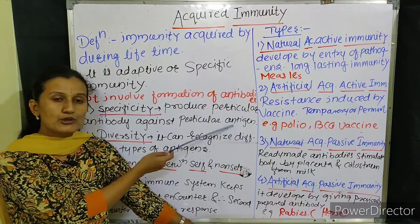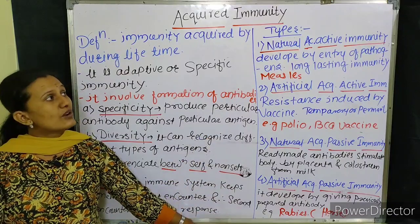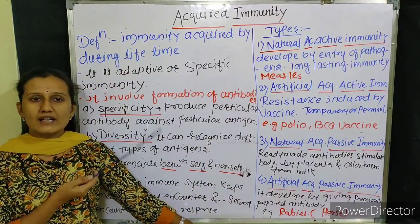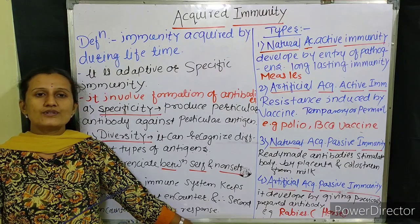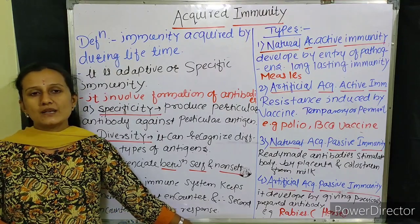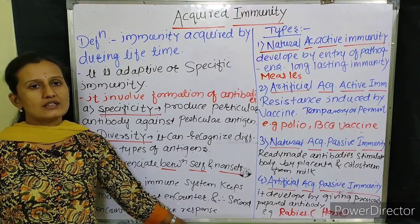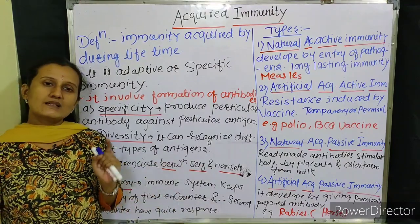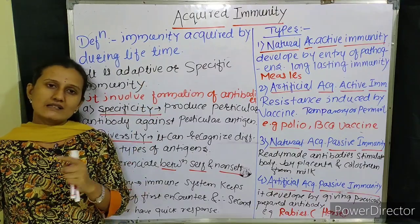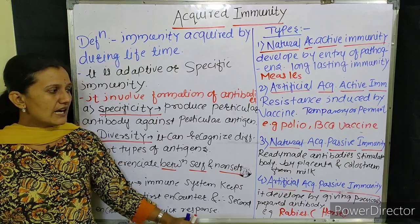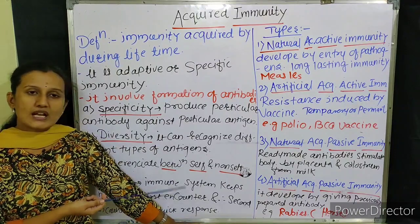Passive acquired immunity is produced after giving ready-made antibodies — immunity developed by giving artificially prepared ready-made antibodies is called passive acquired immunity. It is also divided into two types: natural acquired passive immunity and artificial acquired passive immunity.